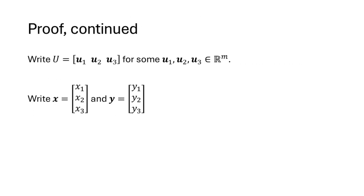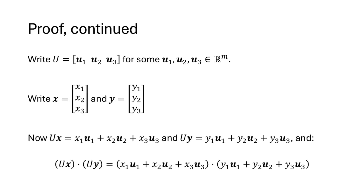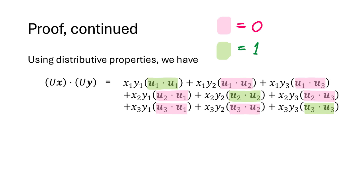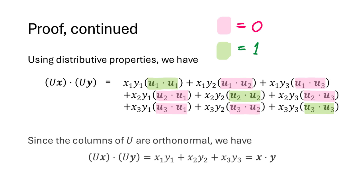Write U as columns u1, u2, u3, and let x and y be vectors with three entries. Ux is the linear combination of the columns of U with weights from x, and Uy uses weights from y. Dotting those two vectors together and applying the distributive property, we get all pairwise dot products of the columns of U. Since the columns form an orthonormal set, the pink dot products are zero and the green ones are one. So Ux dot Uy simplifies to x1y1 plus x2y2 plus x3y3, which is exactly x dot y.